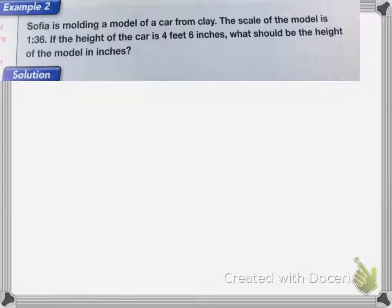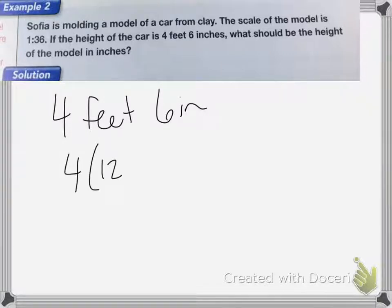All right, so this one, Sophia is molding a model of a car from clay. The scale of the model is 1 to 36. If the height of the car is 4 feet 6 inches, what should the height of the model be in inches? So first I'm going to convert 4 feet 6 inches into inches. So I need to change the 4 feet into inches, and we do that by doing 4 times 12, and then we're going to add that 6 inches. So 4 times 12 is 48, plus 6 is 54 inches.